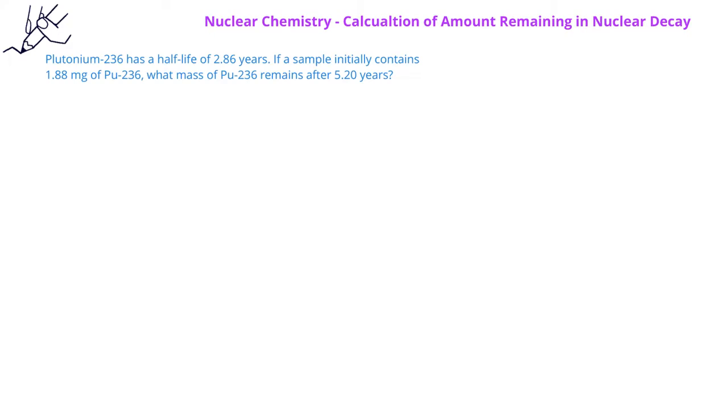In this problem, we are told that plutonium-236 has a half-life of 2.86 years. If a sample initially contains 1.88 mg of plutonium-236, what mass of plutonium-236 remains after 5.20 years? We know that the original amount is 1.88 mg, the half-life is 2.86 years, and the time involved is 5.20 years. We are asked to calculate the amount remaining.